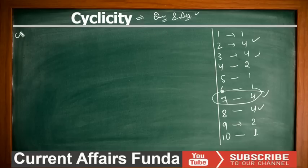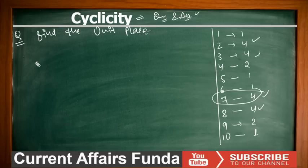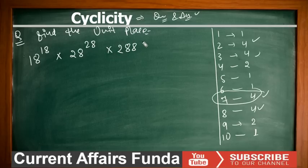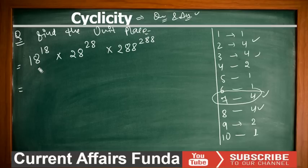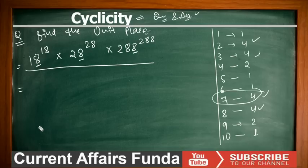Next question: find the unit place of 18^18 × 28^28 × 88^88. Think and try to solve it yourself using the fundamentals we discussed. The unit digits of all three bases are 8, so we write 8 × 8 × 8 and need to find the effective power for each.